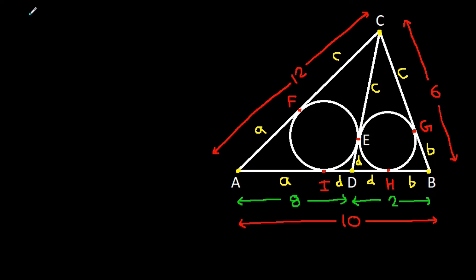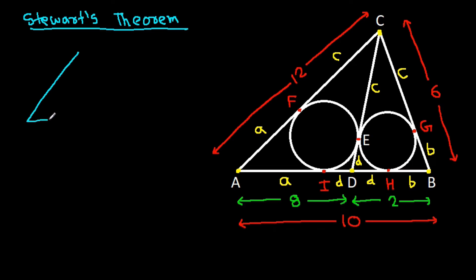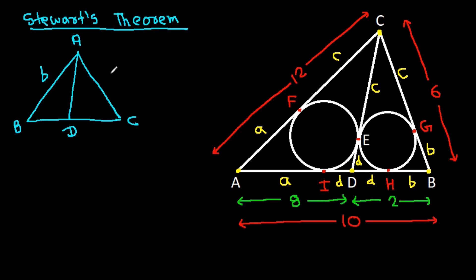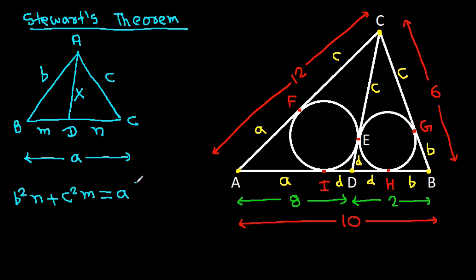Now, from Stewart's Theorem: in any triangle ABC with cevian AD, where AB is 'b', AC is 'c', BC is 'a', BD is 'm', CD is 'n', and AD is 'x', then b² times n plus c² times m equals a times (mn plus x²).